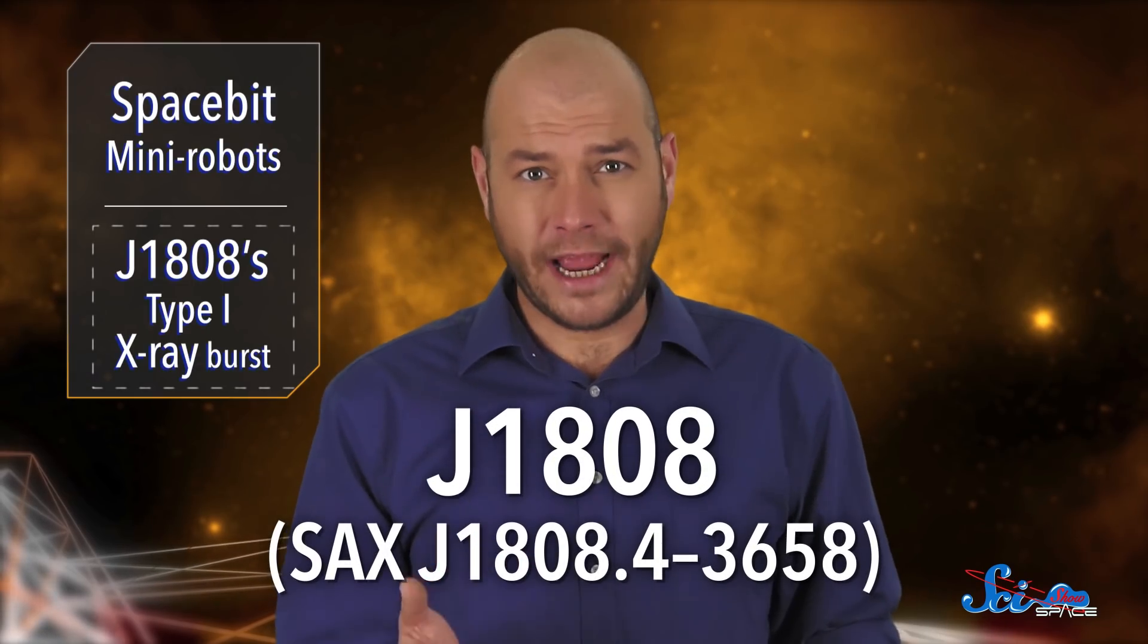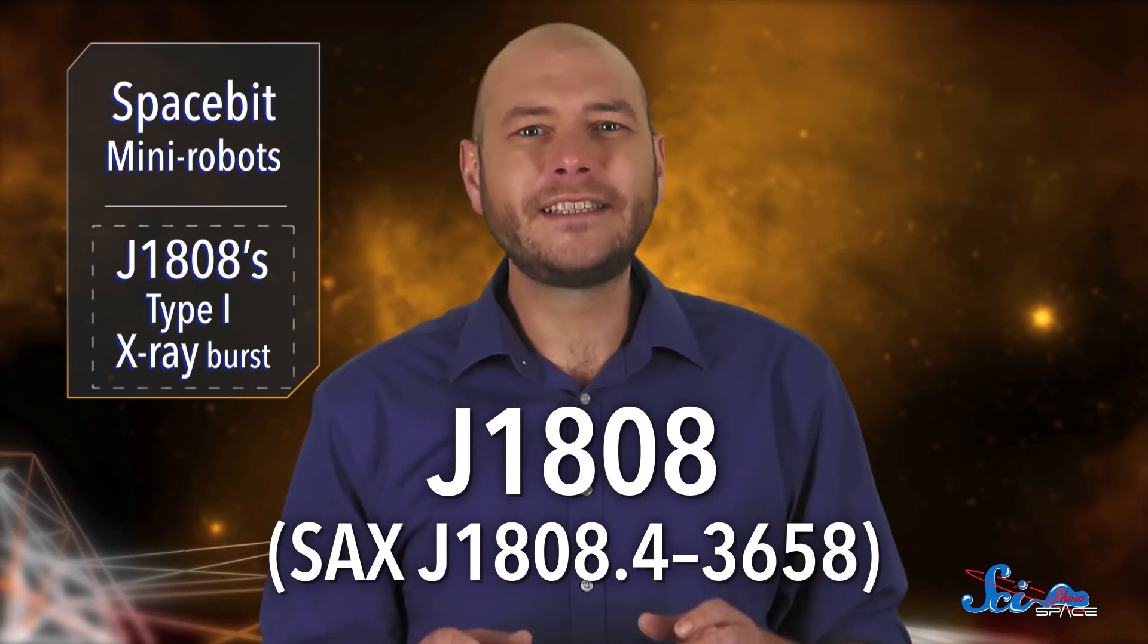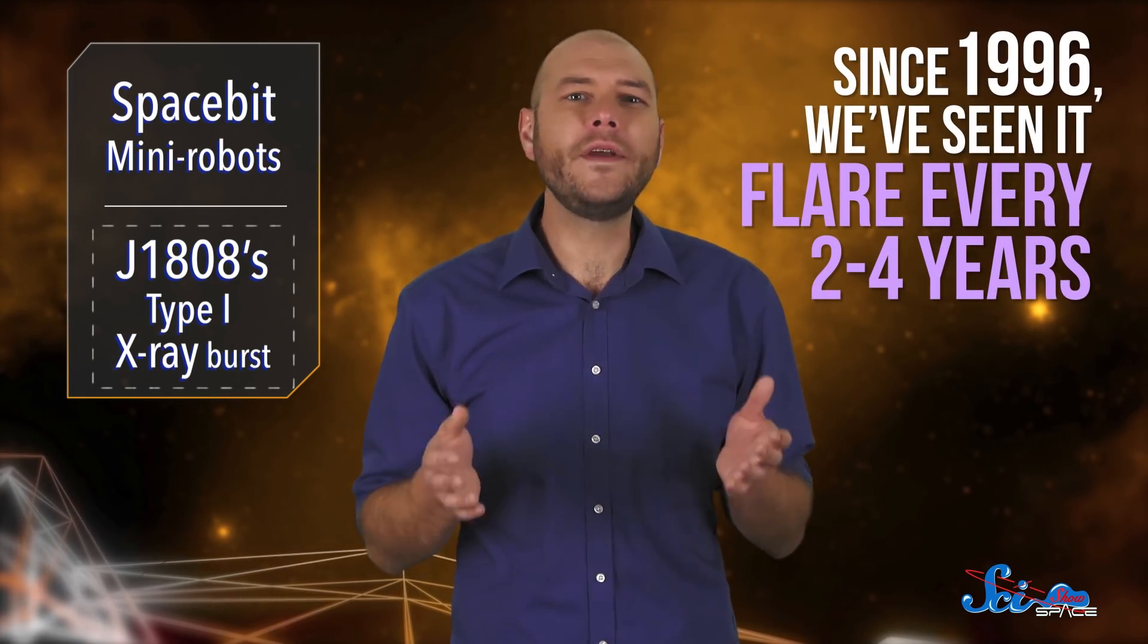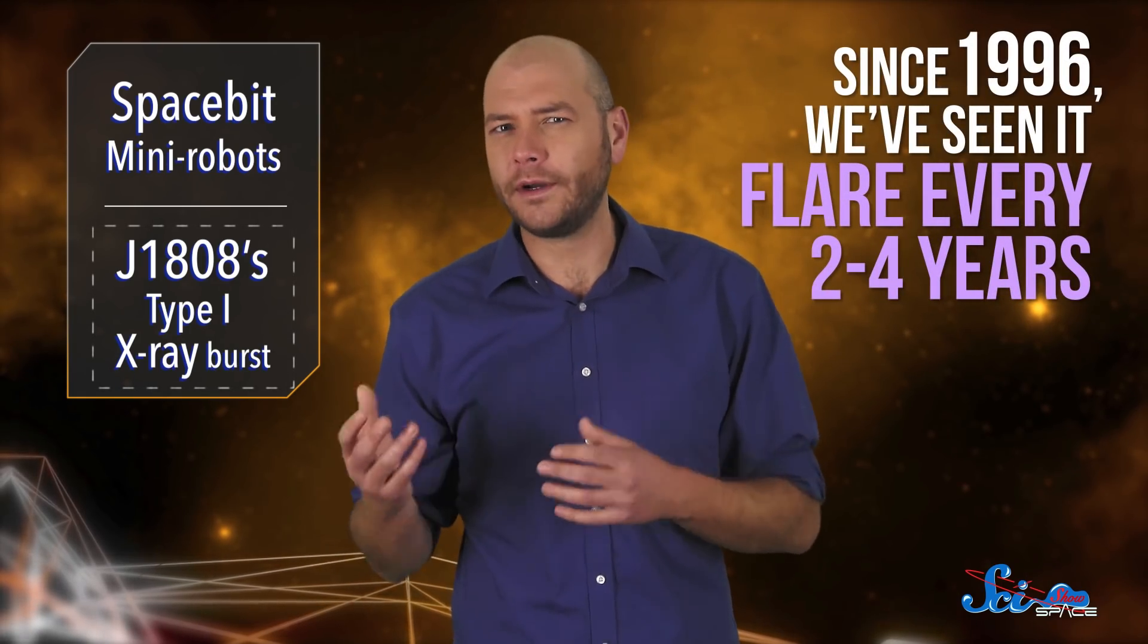The pulsar in question, called J1808 for short, is about 11,000 light-years away. We discovered it back in 1996, when a satellite saw it release a giant flare of X-ray radiation. And since then, we've seen it flare every two to four years.